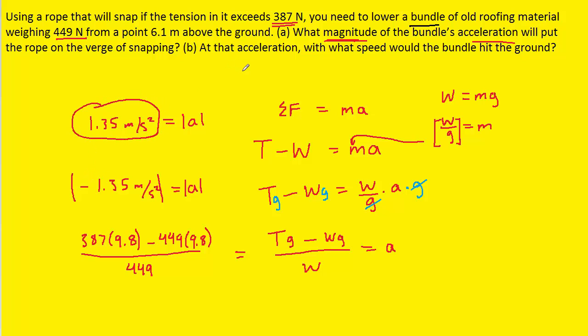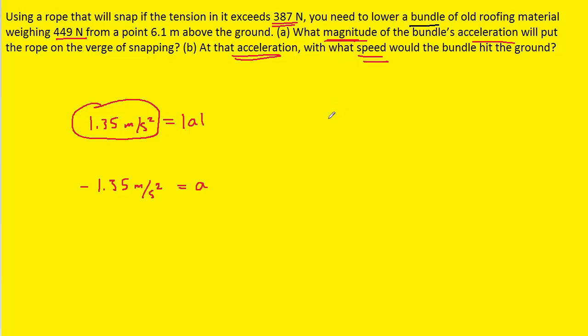In part B, using that acceleration we need to calculate the speed that the bundle will have when it hits the ground. And to do that we need to turn to the equations of kinematics. Now one of the equations from kinematics tells us that the final velocity squared equals the initial velocity squared plus 2 times the acceleration times the displacement that the object is undergoing.